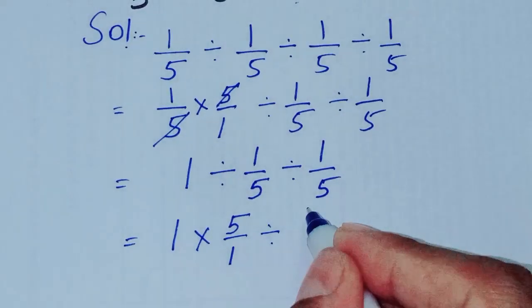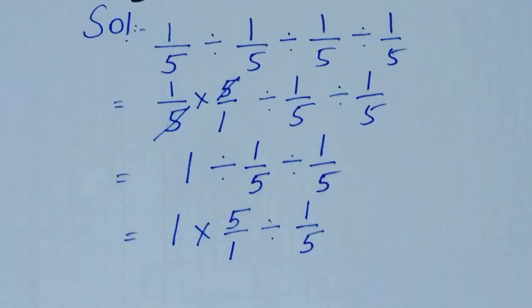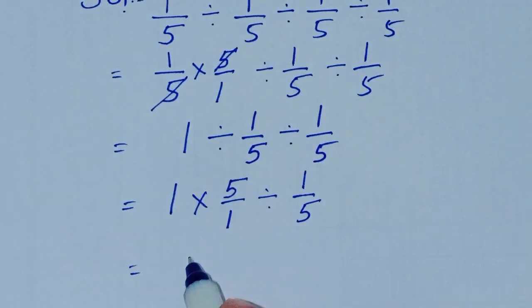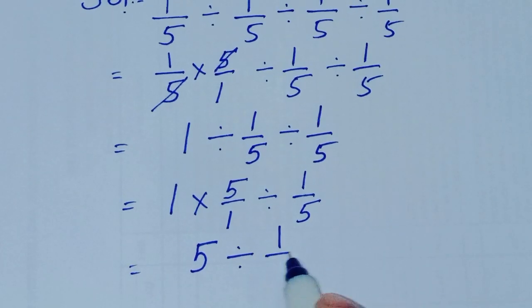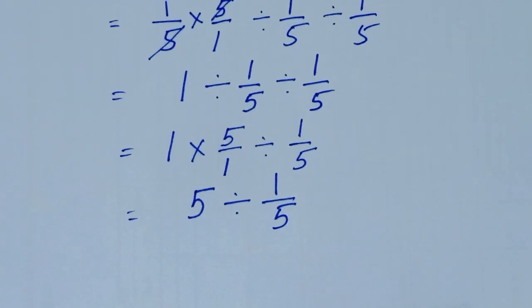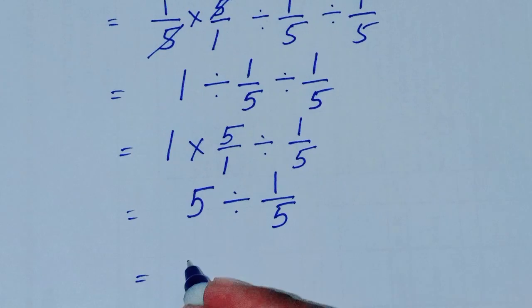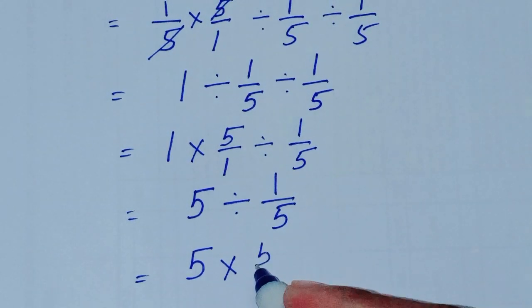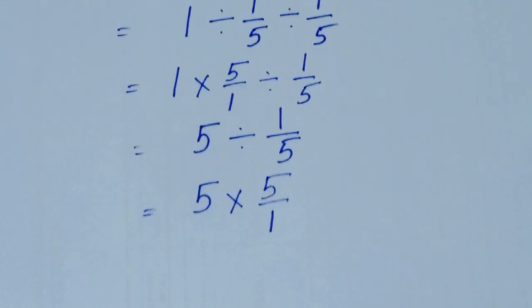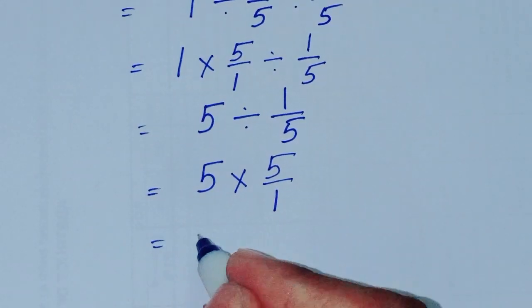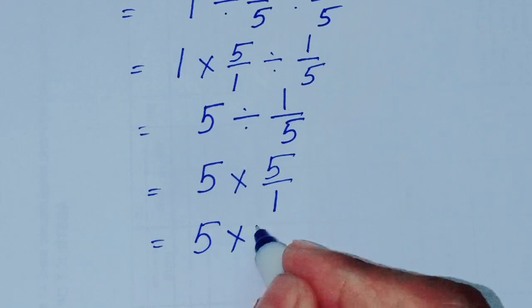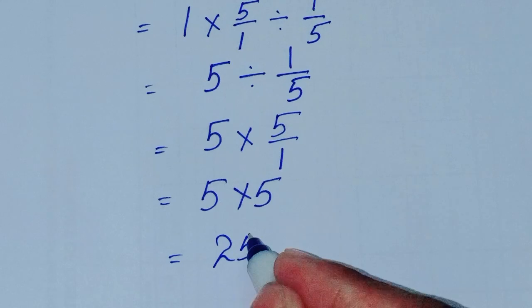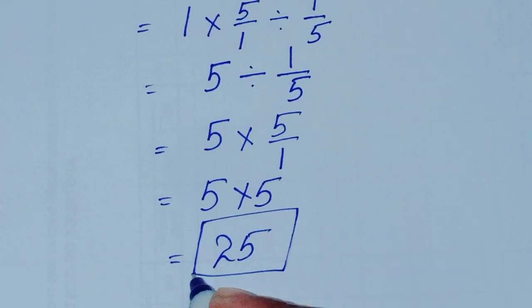1 multiplied by 5 is 5, divide 1/5. 5 divided changes into multiply, so 5/1. So 5 × 5 equals 25.